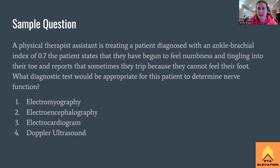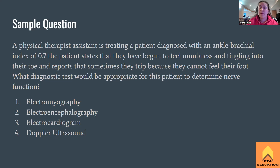Sample question: A physical therapist assistant is treating a patient diagnosed with an ankle brachial index of 0.7. The patient states they have begun to feel numbness and tingling in their toes and reports that sometimes they trip because they cannot feel their foot. What diagnostic test would be appropriate for this patient to determine nerve function? Option 1: electromyography. Option 2: electroencephalography. Option 3: electrocardiogram. Option 4: Doppler ultrasound.